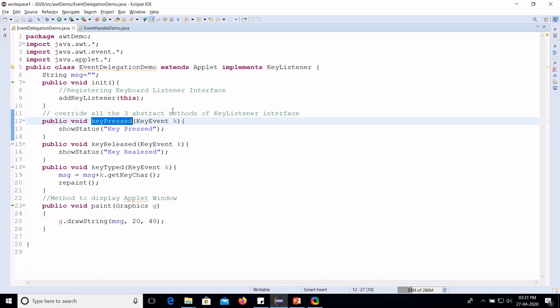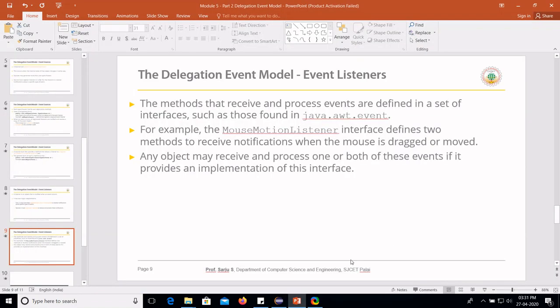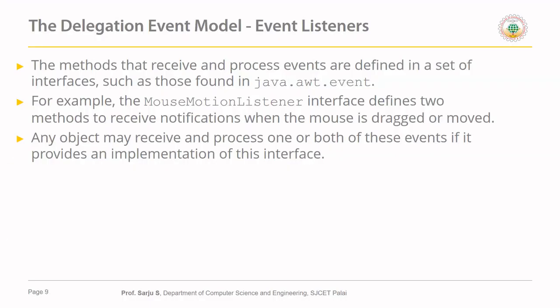The advantage of the event delegation model is that the application logic that processes the event is clearly separated from the user interface logic that generates the event. The user interface is created in one area, and the actions to be performed when interacting with it are defined in another area. This clear separation means a user interface element is able to delegate the processing of an event to a separate piece of code — which is why it is called the event delegation model.